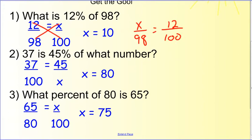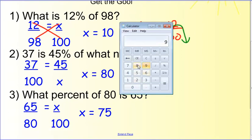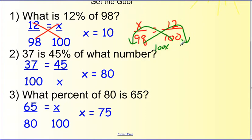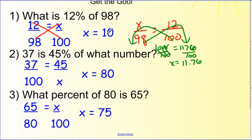If we cross-multiply: 100x on one side, and 98 times 12 gives us 1176. So it's 1176, and then we divide by 100. These cancel, and we get x equals 11.76. Close-ish, but not right. This is the correct answer.